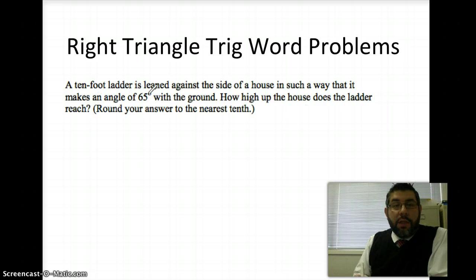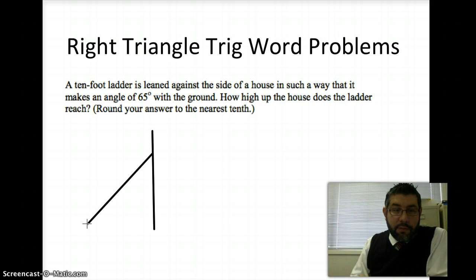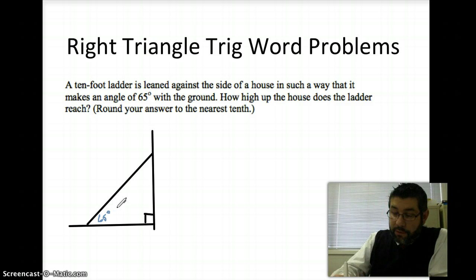A ten-foot ladder is leaned against the side of a house in such a way that it makes an angle of 65 degrees with the ground. So, we're going to go ahead and draw the house. Here's the house, and the ladder kind of does this. And here's the ground. So, we have a right triangle. And it says that the angle here is 65 degrees.